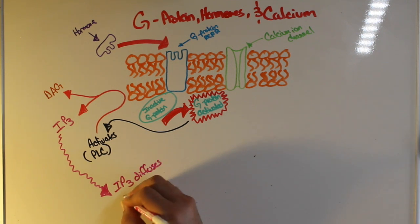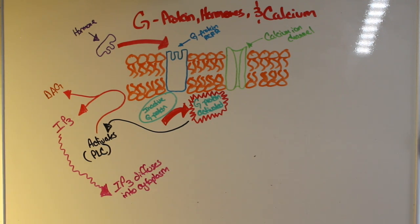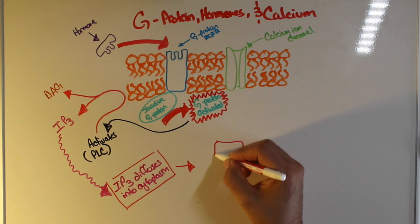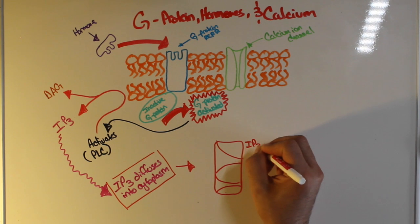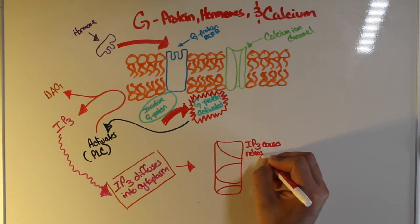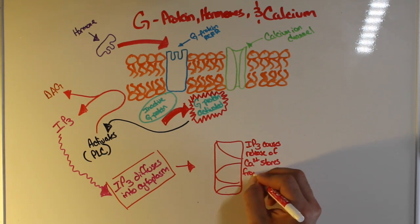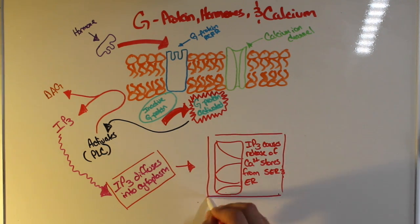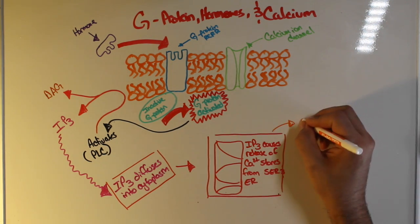Now once this happens, IP3 will diffuse into the cytoplasm. Now there are IP3 receptors on the smooth and rough endoplasmic reticulum. When IP3 binds with the smooth and rough endoplasmic reticulum, it will cause the release of stored calcium within the cytoplasm. This in turn will increase the intracellular levels of calcium within the cell.